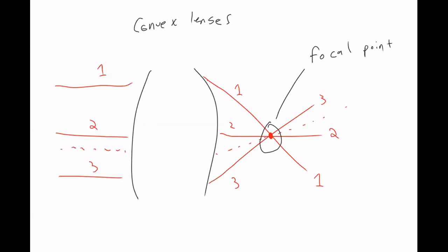The distance from the lens to the focal point is called the focal length, and it has the variable lowercase f. These are called converging lenses because the light rays converge on the right-hand side of the lens.